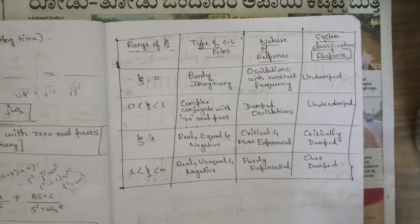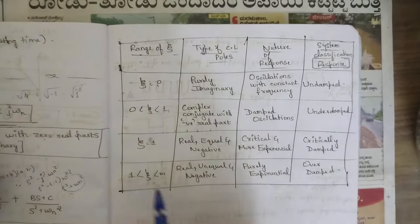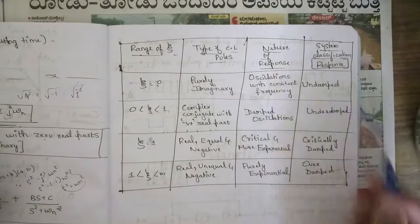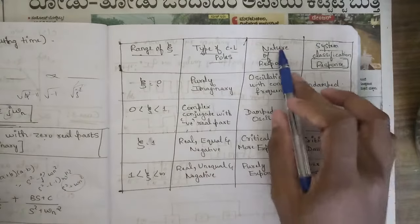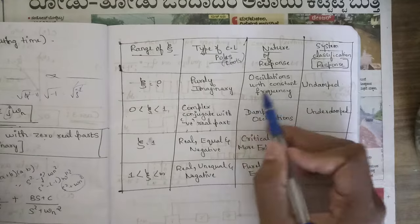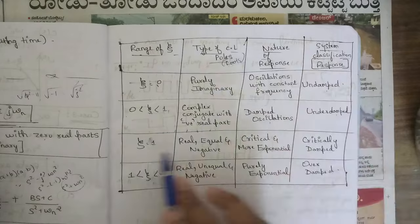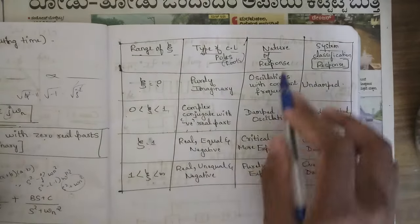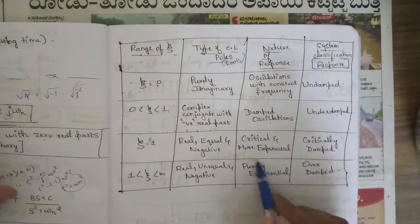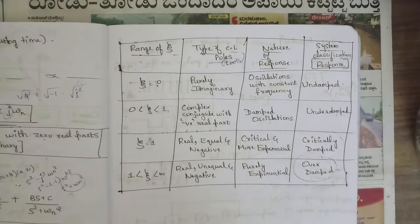A summary table covers all four cases: when ζ = 0 — purely imaginary poles, oscillation with constant frequency, undamped; when 0 < ζ < 1 — complex conjugate with negative real part, damped oscillations, under-damped; when ζ = 1 — real, equal, negative roots, exponential response, critically damped; when ζ > 1 — real, unequal, negative roots, purely exponential response, over-damped. Please make a note of these four important cases.